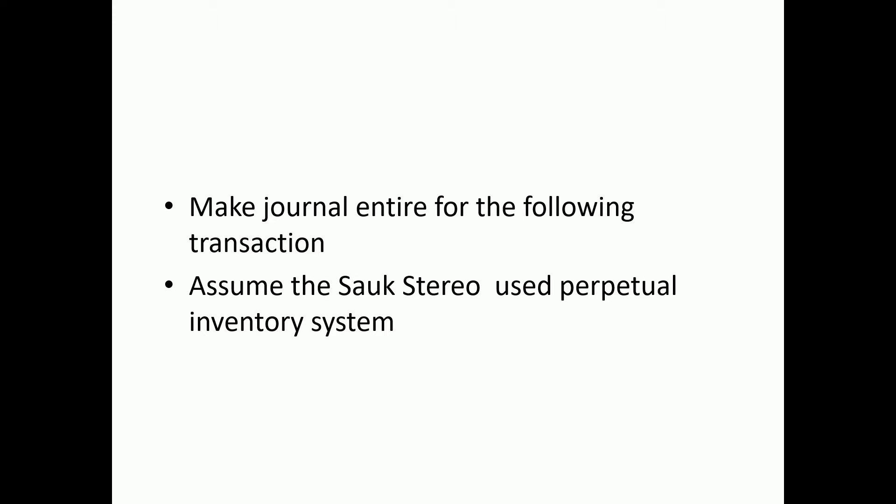Merchandising business topics include: income statement, cost of goods, gross profit, and inventory systems — periodic inventory system and perpetual inventory system. We will also cover consigned goods, goods in transit for shipping, and FOB destination. We are going to talk about journal entry transactions.